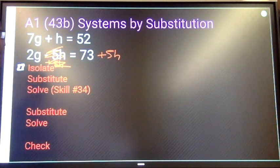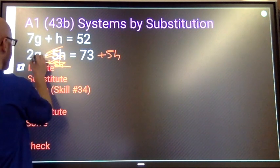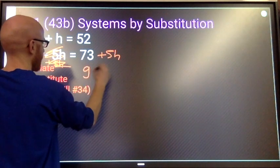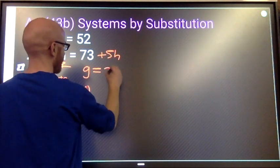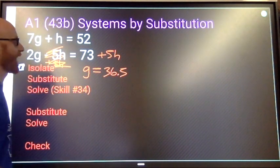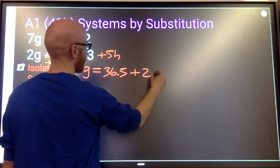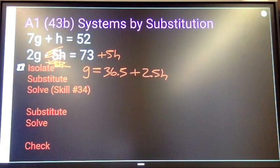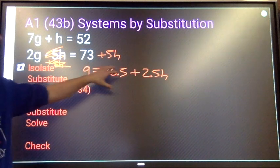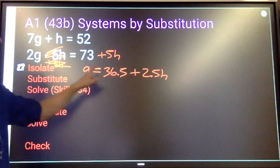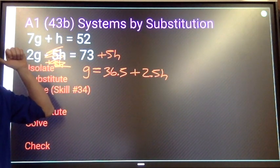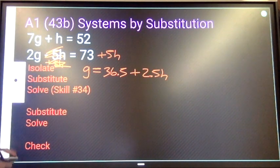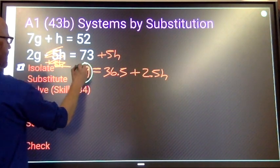Divide everything by 2. So we will have g equals 73 divided by 2 is 36.5, and 5h divided by 2 is 2.5h. And again, having done that, having isolated g, we could do what we did in part A.